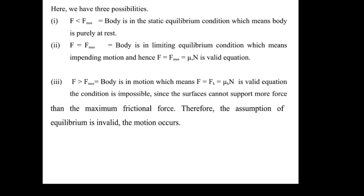There are three possibilities. First, when the applied force is less than the limiting friction, the body remains in rest or equilibrium. Second, when the applied external force equals the limiting friction, the body is in limiting equilibrium. Up to this point, F equals F_max, which equals mu_s times N, where mu_s is the coefficient of static friction and N is the normal reaction force.